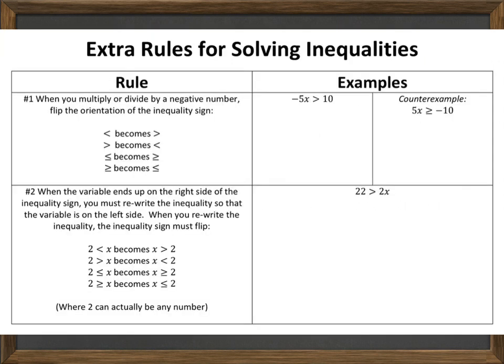Let's explore these extra rules further. The first rule is when we multiply or divide by a negative number, we have to flip the orientation of the inequality sign. That means if we have less than, we rewrite it as greater than. If we start with greater than, it becomes less than. If we start with less than or equal to, it becomes greater than or equal to. And if we start with greater than or equal to, it becomes less than or equal to.